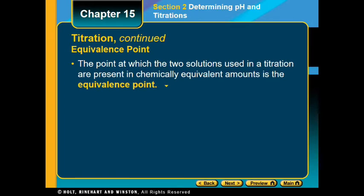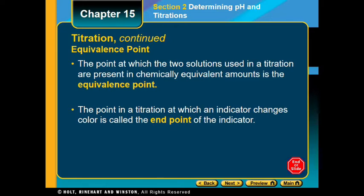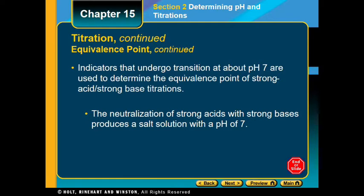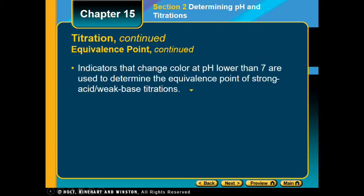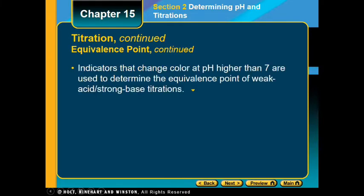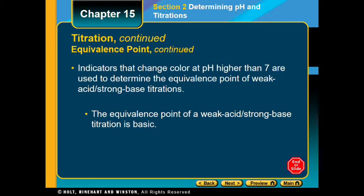The equivalence point is when two solutions used in titration are present in chemically equivalent amounts. The point at which the indicator changes color is the end point. Indicators that transition at about pH 7 are used for strong acid/strong base titrations, producing a salt and a pH of about 7. Indicators changing color at pH below 7 are for strong acid/weak base titrations; those changing above 7 are for weak acid/strong base titrations.